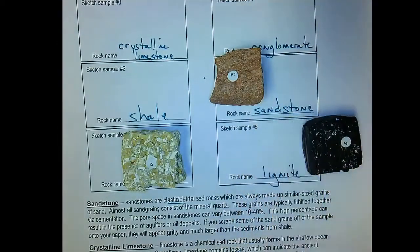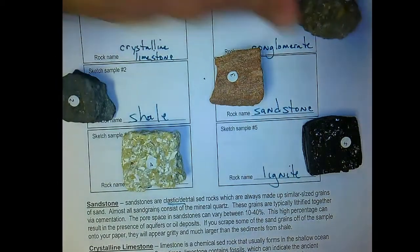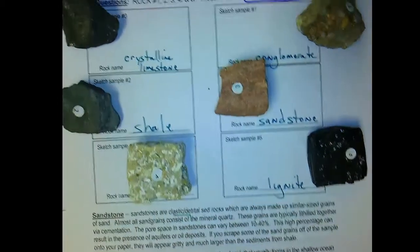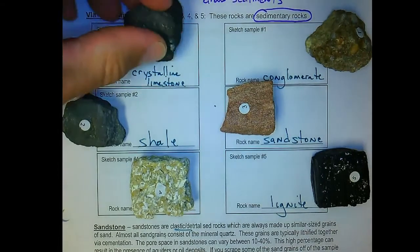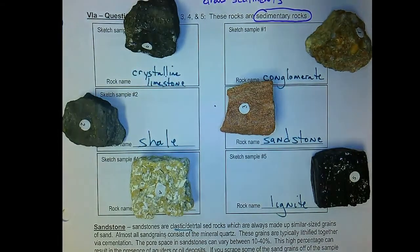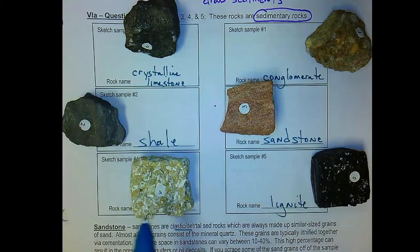So we have sandstone, shale, conglomerate, crystalline limestone, coquina, and coal — all sedimentary rocks that tell a story of the environment in which they were deposited, the energy involved with their deposition and transport, and many give an indication of paleo life forms involved in those organic processes.